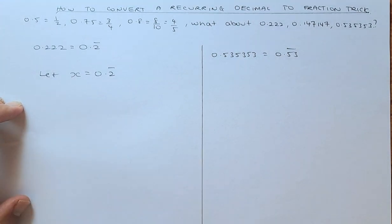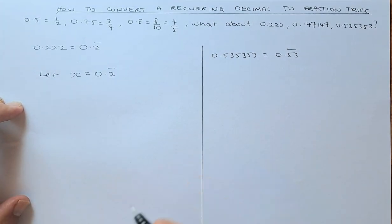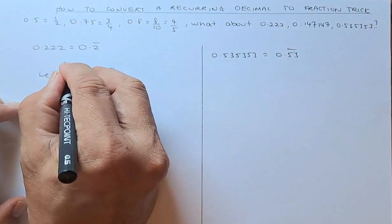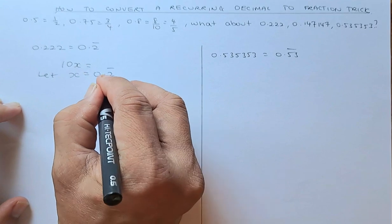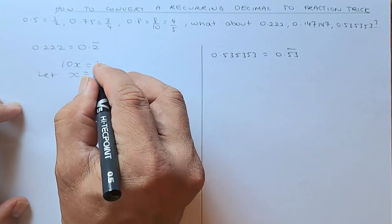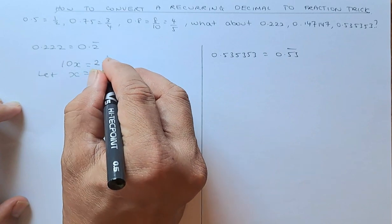And because there's one decimal point, we are going to multiply it by 10. So when you multiply this whole equation by 10, that becomes 10x. x times 10 is 10x. And then 0.2 times 10, that will bring the one decimal place, is going to be 2.2 recurring.